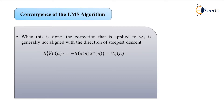Since W_n is a vector of random variables, the convergence of the LMS algorithm must be considered within a statistical framework. We assume that the input discrete-time random signal X(n) and the desired signal D(n) are jointly wide-sense stationary processes. We shall determine when the coefficients W_n converge in the mean to W, given as the inverse of the autocorrelation matrix R_X multiplied by the cross-correlation r_DX.